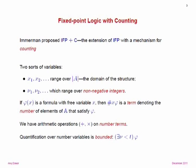Immerman proposed just adding the ability to count — just as you add IFP — and that might be enough to give you all of polynomial time. So here is his proposal, which I'll present with 20 years of hindsight in a slightly different form. We call it IFP+C, fixed-point logic with counting. We take IFP but now have two sorts of variables — this is two-sorted logic: variables ranging over the domain of the structure, and variables ranging over non-negative integers, the number variables.